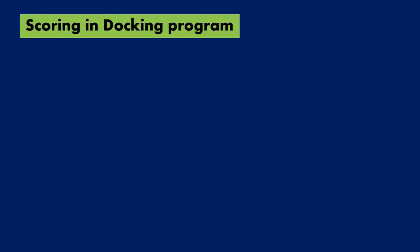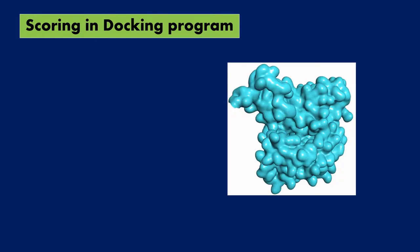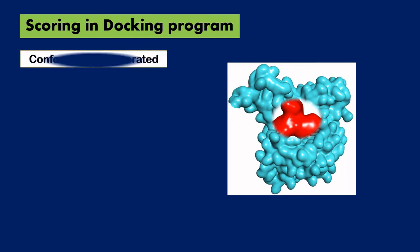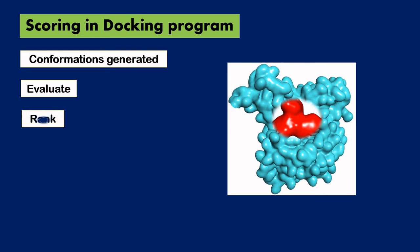Now coming to scoring — what is meant by scoring in a docking program? When you perform a molecular docking experiment, you take a protein and a ligand. When the ligand binds to the protein, conformations are generated. When there are a few number of ligands, the data obtained is manageable and you can manually identify and rank the different conformations. But when you take a database of compounds containing lakhs of compounds, the amount of data generated is very huge and cannot be managed manually. So in order to simplify the task, we need a computational tool which can evaluate the conformations generated and rank them accordingly.